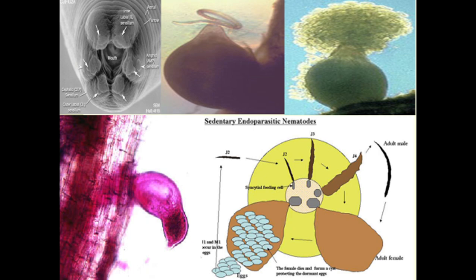This is the female nematode in J3 stage. Sometimes motile nematodes also develop as a J4 motile male nematode, and J4 sedentary female nematodes, which are partly inside the root tissues and partly outside of the root tissue.